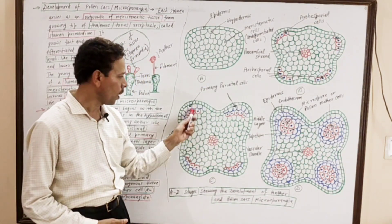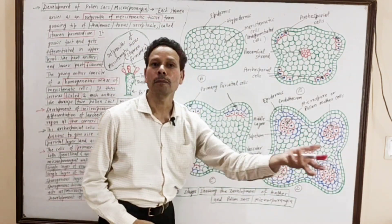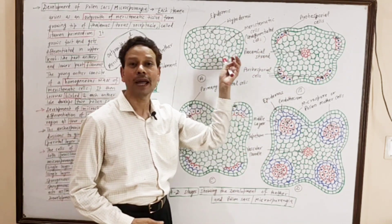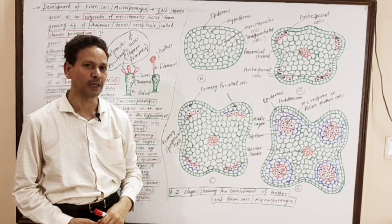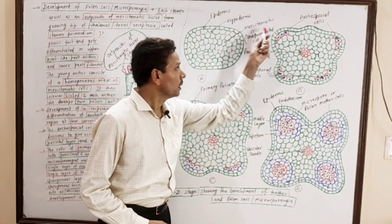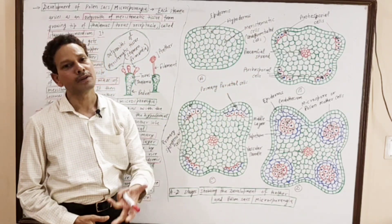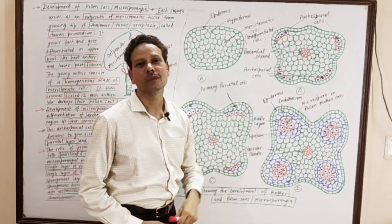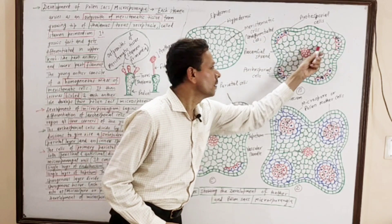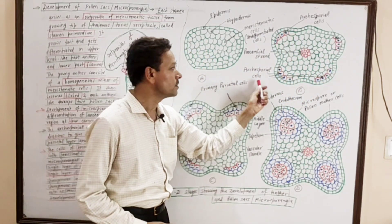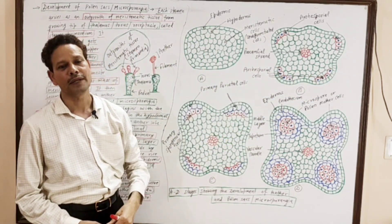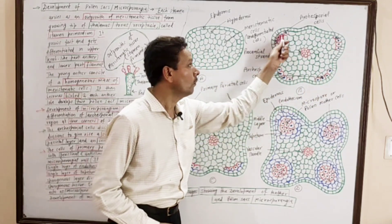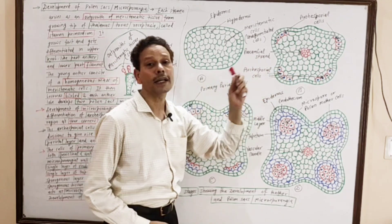In each anther lobe, 4 pollen chambers and 4 microsporangia develop. In this lecture, I will clear all about the development of anther, development of pollen sacs, and development of microsporangia. The young anther is a mass of meristematic cells. Soon it becomes differentiated into a bilobed structure. At each corner of this young anther, strips of archesporial cells develop.